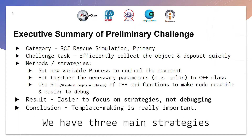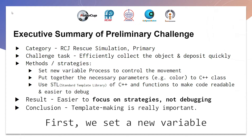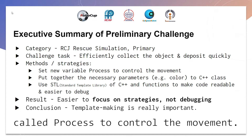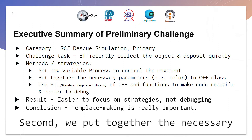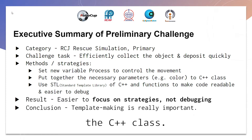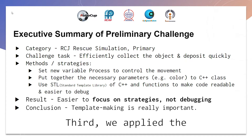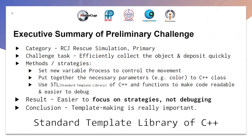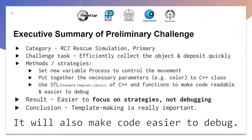We have three main strategies we can apply to any map for this challenge. First, we set a new variable called 'process' to control the movement — we will discuss this later. Second, we put together the necessary parameters such as colors into a C++ class, making the structure of the code concise. Third, we apply the standard template library of C++ and functions to make the code readable and easier to debug.